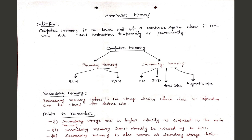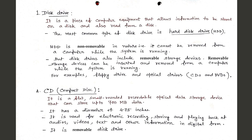In this lesson I will discuss about secondary memory in detail. Secondary memory refers to the storage devices where data or information can be stored for future use. Key points: secondary storage has a higher capacity compared to main memory; secondary memory cannot directly be accessed by the CPU; and secondary memory is also known as a secondary storage device.